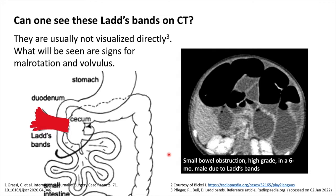Well, usually they are not directly visualized. What we'll see are the signs for malrotation and volvulus. In this example, the Ladd's bands are not seen but we can see the small bowel obstruction.